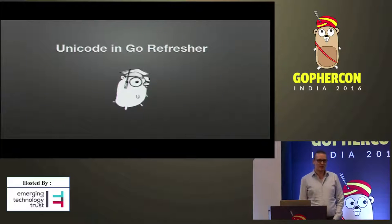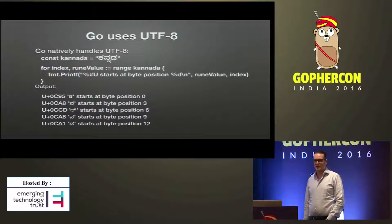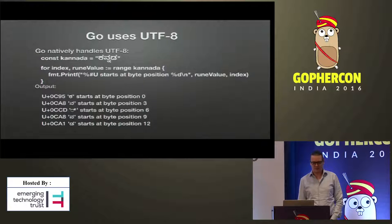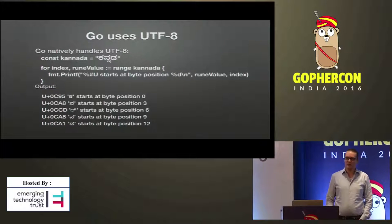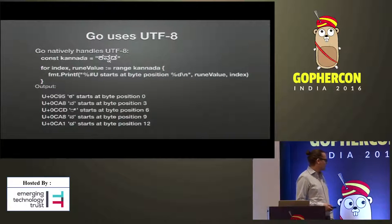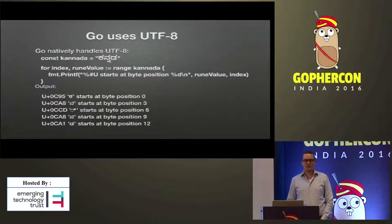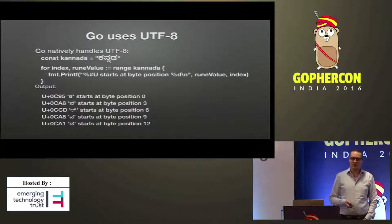A little Unicode refresher in Go. Go uses UTF-8, which I think is really the right choice, unlike many other languages. ASCII remains ASCII, and it's the encoding of choice for the web. Strings in Go don't have to be UTF-8, but they commonly are. If you range over a string in Go, you get one code point — called a rune in Go — one code point after the other. So you jump through positions in the string one code point at a time, and a code point can be anywhere from one to four bytes. It's a variable-length encoding.